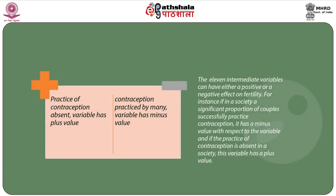The above listed 11 intermediate variables can have either a positive or a negative effect on fertility. For instance, if in a society a significant proportion of couples successfully practice contraception, it has a minus value with respect to that variable; and if the practice of contraception is absent in a society, this variable has a plus value. The fertility level in any society is determined by the combined effect of all these 11 variables. All of these variables are present in every society, and each one can operate to reduce or to enhance fertility.